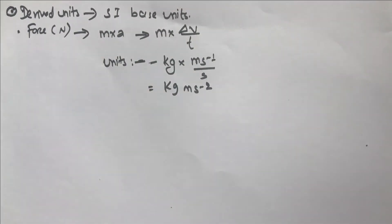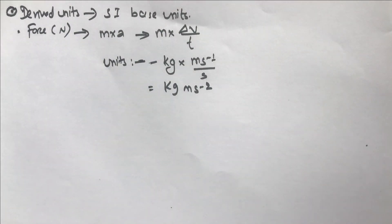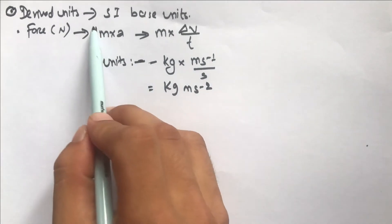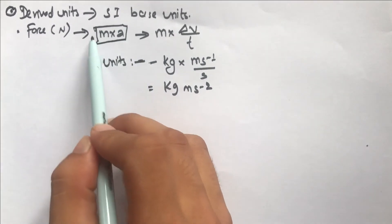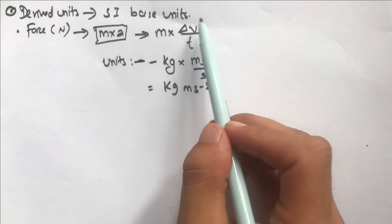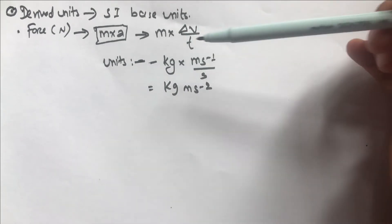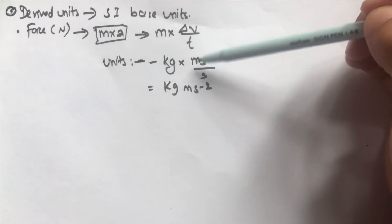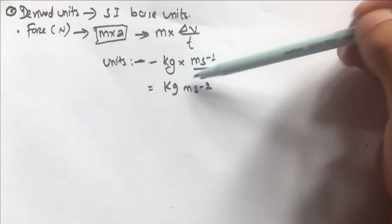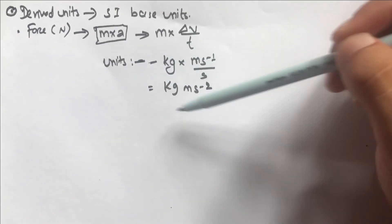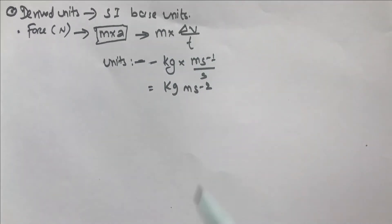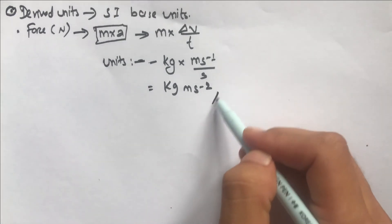In this way you can convert all derived units to SI base units. In examinations — for example in Paper 1 — they might ask you to do this. What you need to do is figure out the formula, then simplify the units as much as you can until you can write the base units, and that gives you your answer.